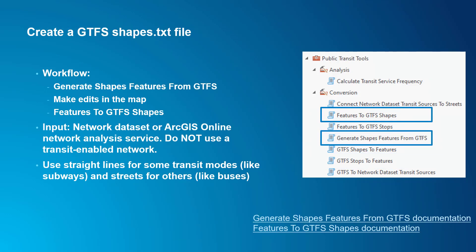The optional GTFS shapes.txt file contains a representation of the geographic paths taken by transit vehicles in a transit system. A good GTFS shapes.txt file is important for GTFS-based routing apps to display transit routes correctly on the map. Although many transit agencies generate their shapes.txt files using GPS trackers on their vehicles, other transit agencies lacking this hardware may have trouble creating this file. We have some tools designed to help you generate a shapes.txt file for your agency if you fall into this latter category.